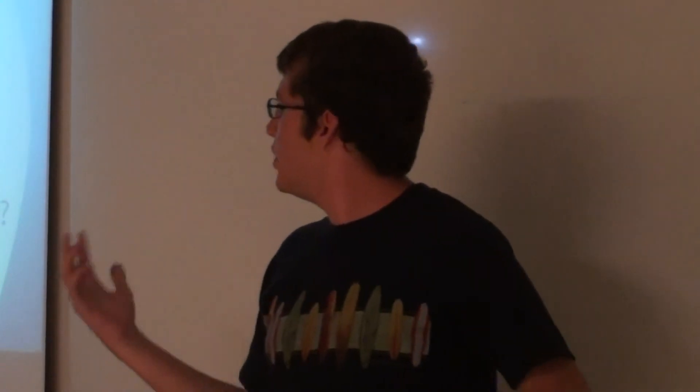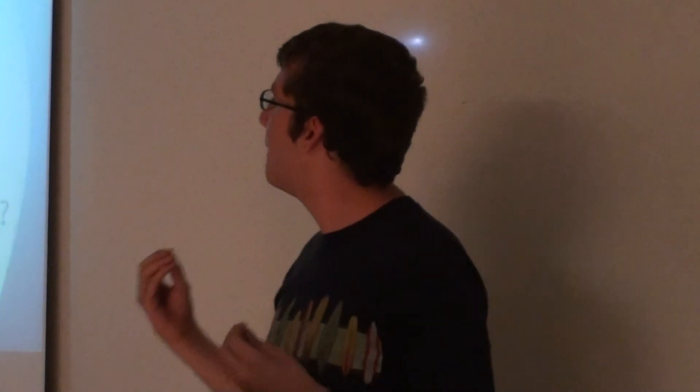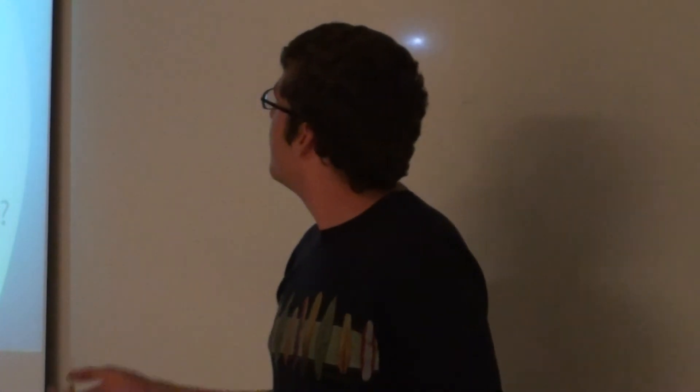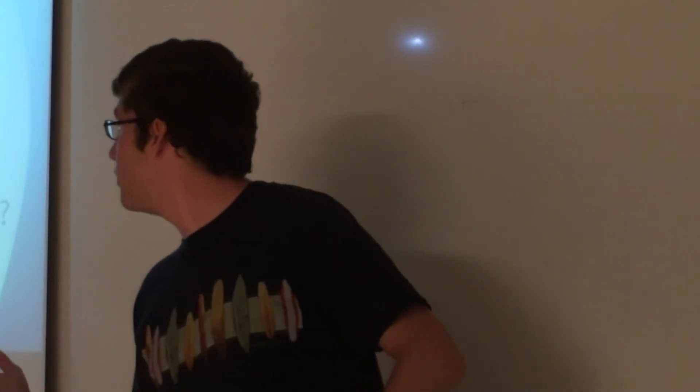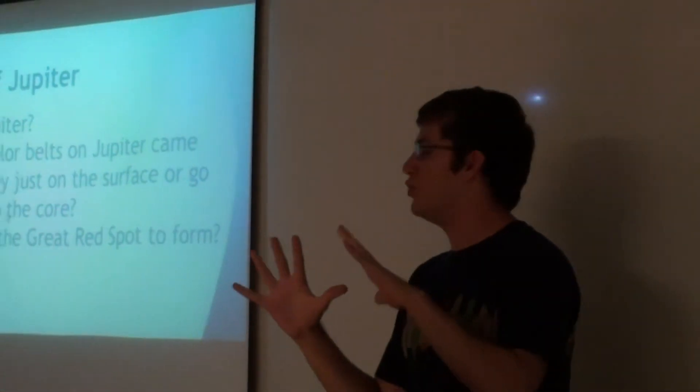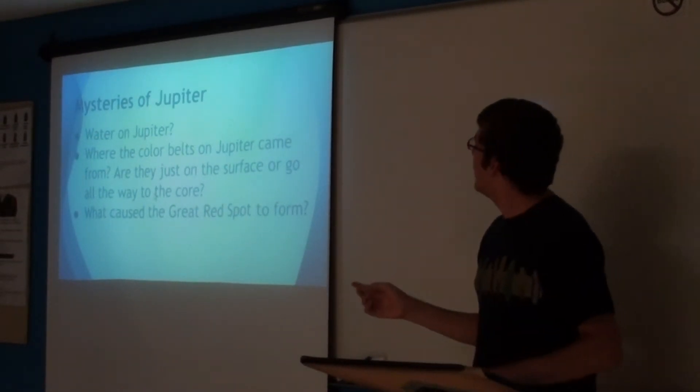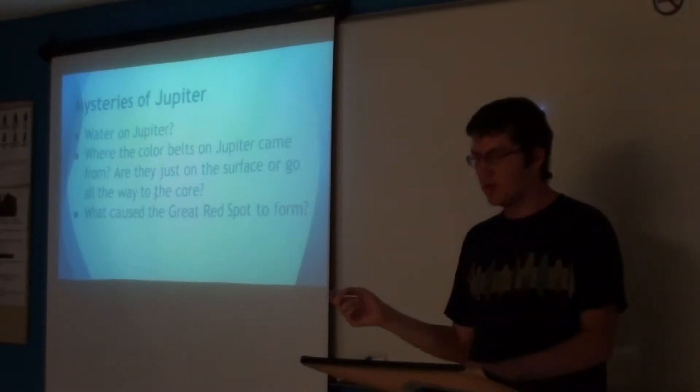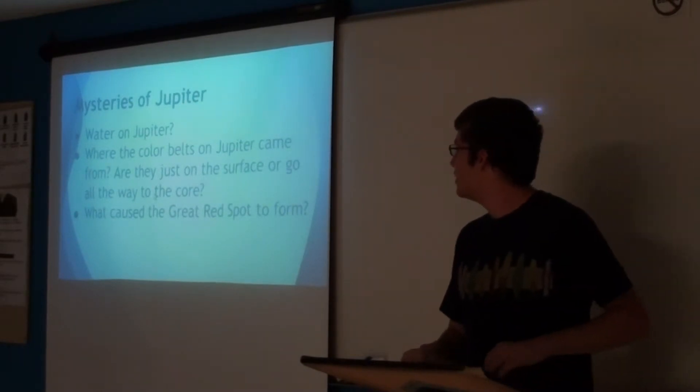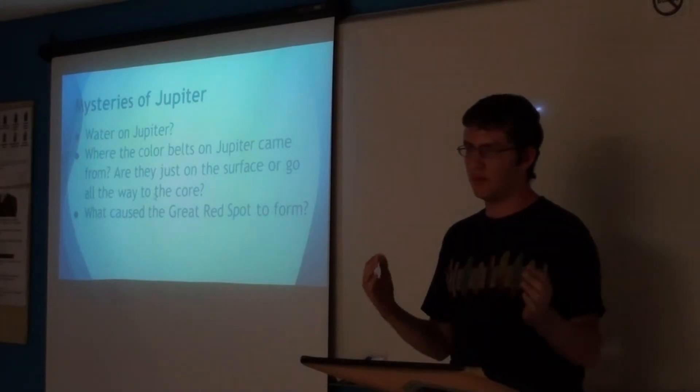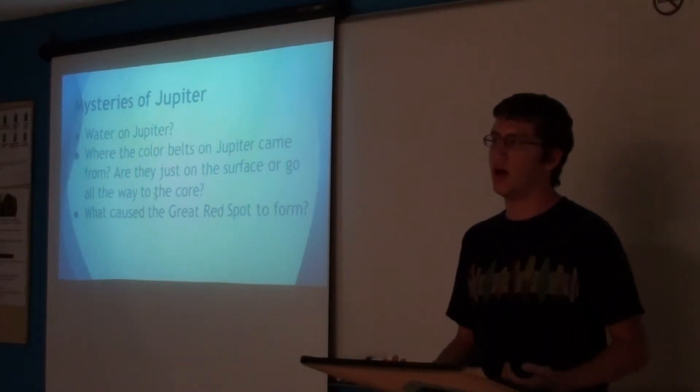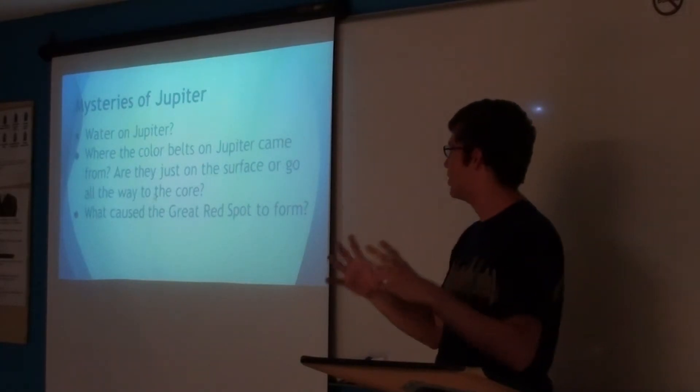We know that there is water in the atmosphere of Jupiter, but we don't know how much. Because we haven't taken a large enough sample to get a good percentage of how much water is in there. And we don't know whether the color belts, the hydrogen and helium belts, go all the way to the center or if those are just on the top and the center is more uniformly distributed. And we don't really know what made the red spot occur. We know that it's from the winds of Jupiter, but we don't know what's caused the winds to create the giant dot on Jupiter.